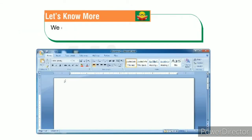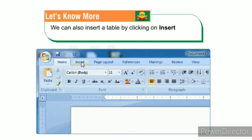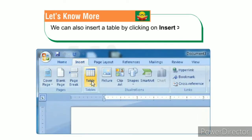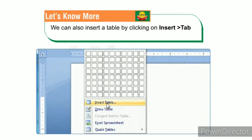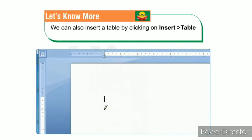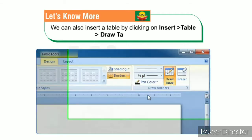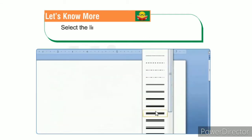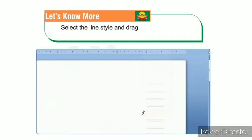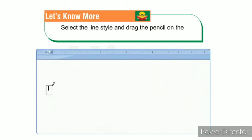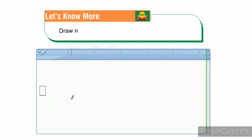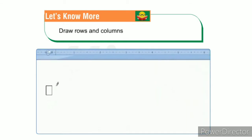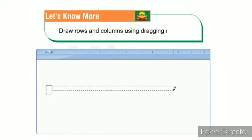You can also insert a table by clicking Insert, then Table, then Draw Table option. Select the line style and drag the pencil on the working area to draw rows and columns using the dragging method.